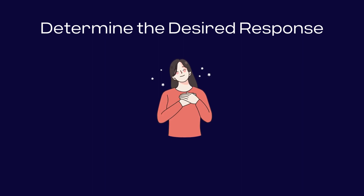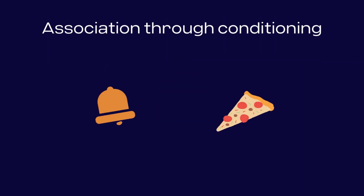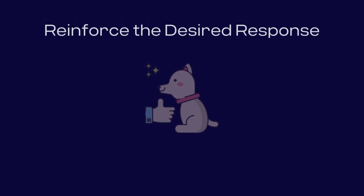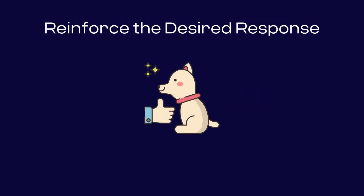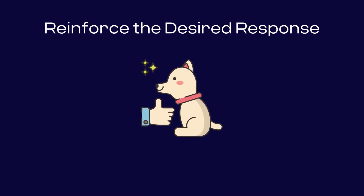Association through conditioning: pair the conditioned and unconditioned stimuli. Repeatedly pair the conditioned stimulus, like a bell sound, with the unconditioned stimulus, like food, until an association is formed. Reinforce the desired response using rewards or positive reinforcement to strengthen the desired response to the conditioned stimulus.